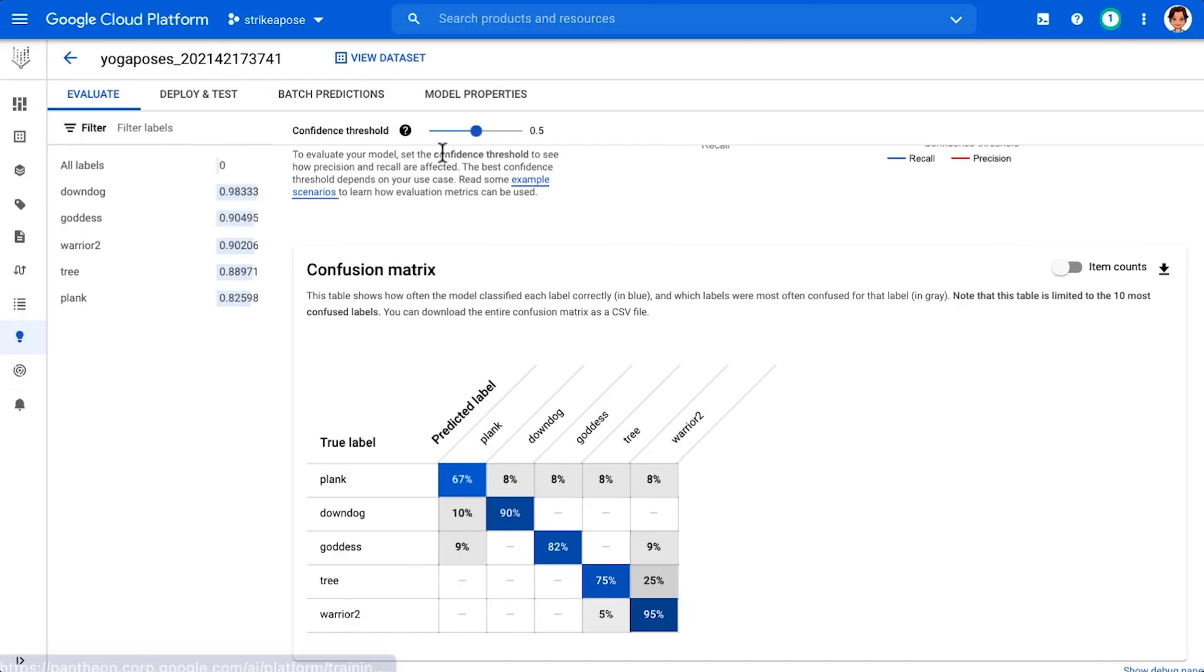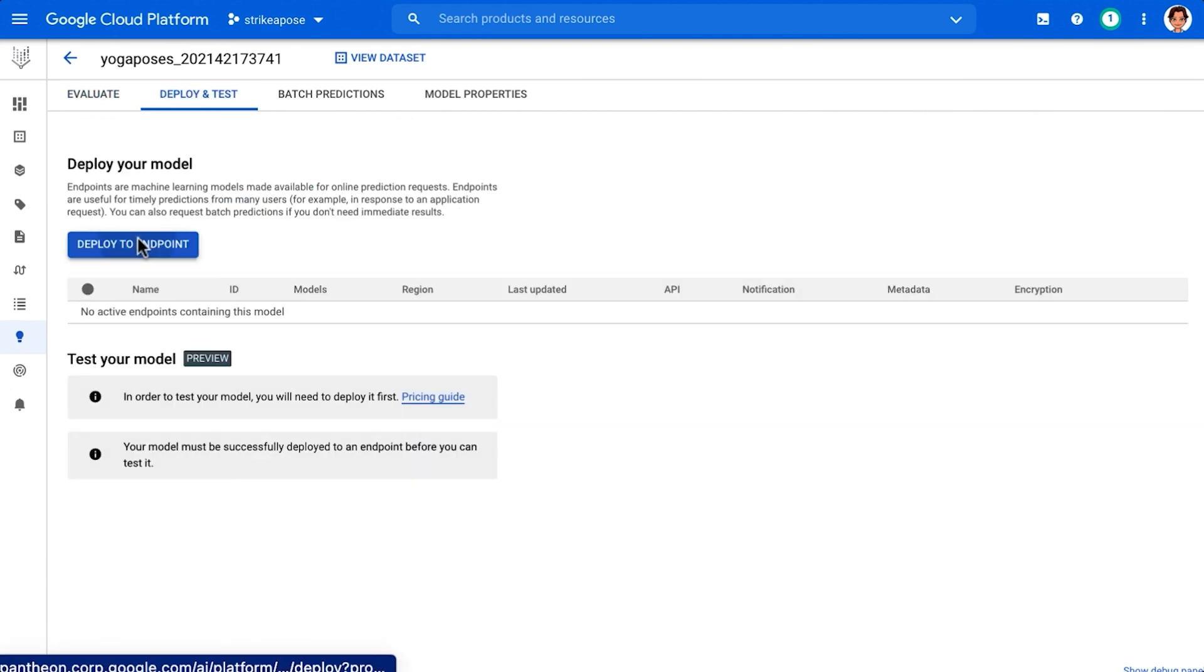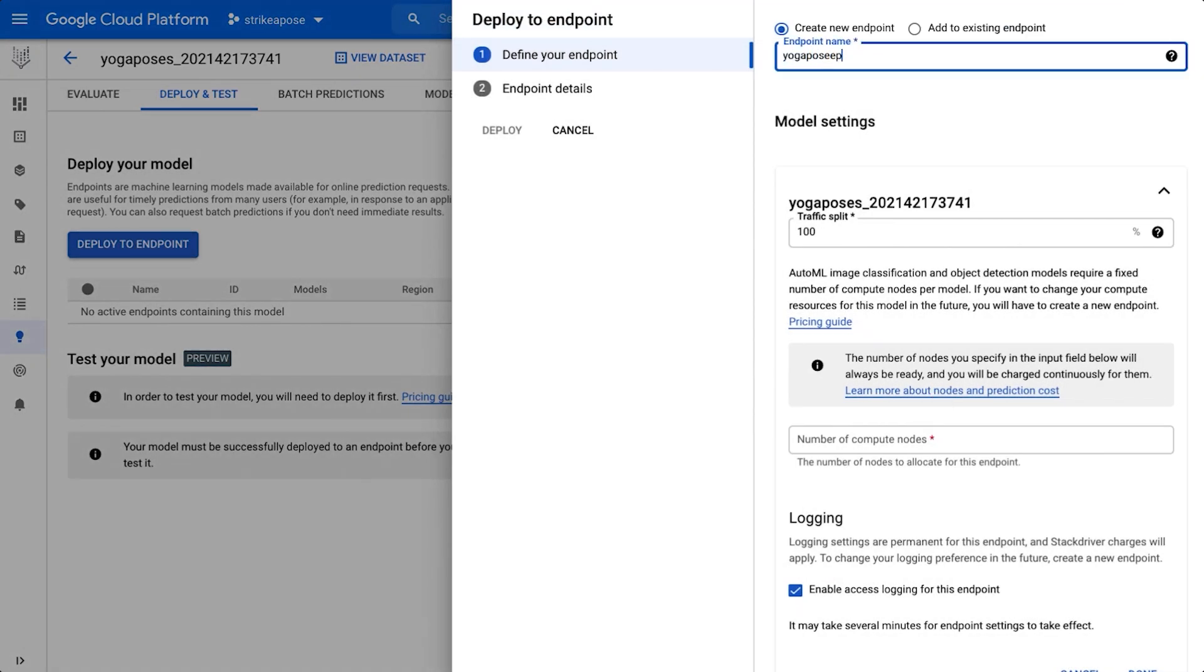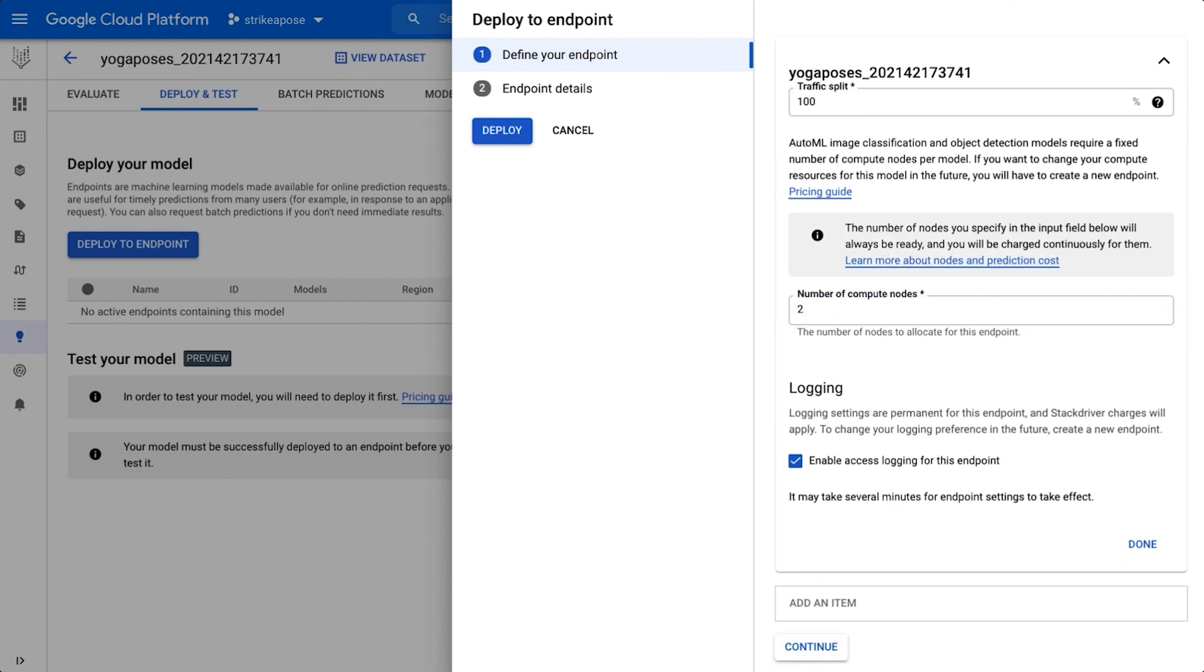Now that we have evaluated our model, it's time to deploy it to an endpoint. We can split traffic between two models deployed on the same endpoint if needed. Allocate the number of nodes needed for this endpoint.